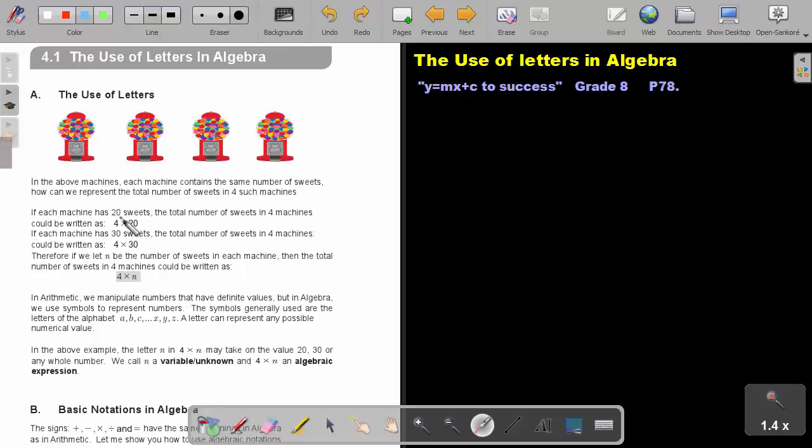If each machine has 20 sweets, the total number of sweets in 4 machines could be written as 4 multiply 20 because it's 20, 20, 20, 20, 4 times.